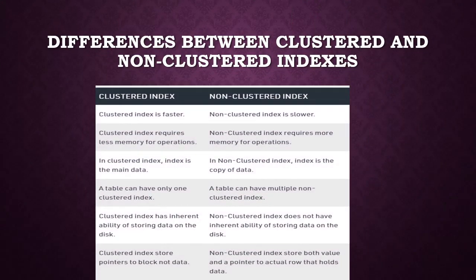Differences between clustered and non-clustered indexes: clustered indexes are fast while non-clustered are slower; clustered indexes require less memory, non-clustered require more; a clustered index contains the main data while a non-clustered index works on a copy of data; a table can have only one clustered index but multiple non-clustered indexes. A clustered index stores pointers to data blocks, while a non-clustered index stores both the value and a pointer to the actual row holding the data.